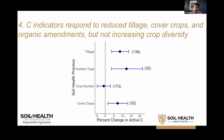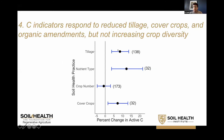Question four is about the relationship between indicators and management, addressed using response ratios. I'm comparing among soil management systems at the same site — pairing treatments within a site that differed only in specific soil health practices. The four practices are: tillage (specifically decreasing tillage), nutrient type (including organic amendments), crop number (diversity of crops in the rotation), and cover crops. The black circles represent the mean value of all pairs of treatments where only that practice varied.